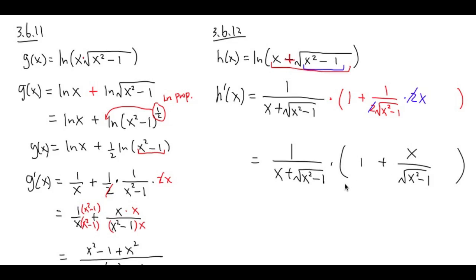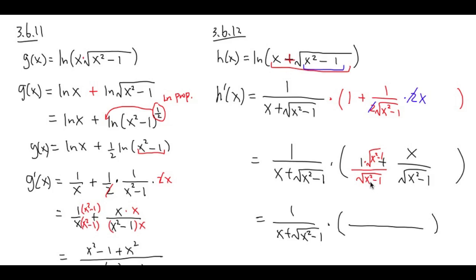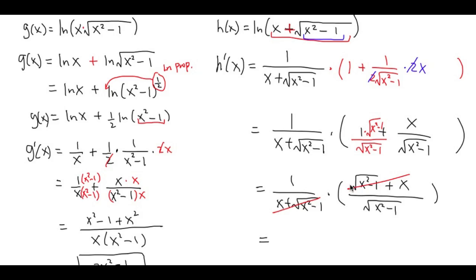Let's combine the fractions inside the parentheses. To get a common denominator of square root of x squared minus 1, multiply 1 by square root of x squared minus 1 over square root of x squared minus 1. The numerator becomes square root of x squared minus 1 plus x, and the denominator is square root of x squared minus 1. Notice that x plus square root of x squared minus 1 in the numerator matches the denominator of the first factor exactly, so they cancel completely. The final answer for number 12 is 1 over square root of x squared minus 1. As you can see, the answers are totally different.